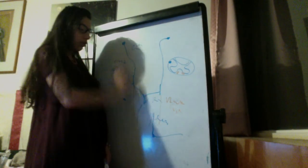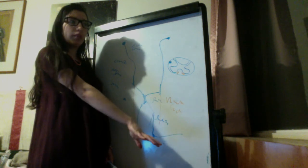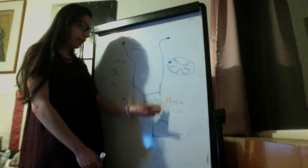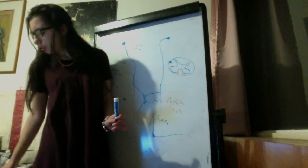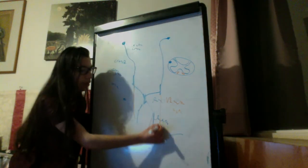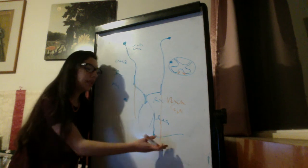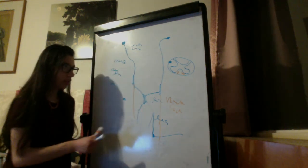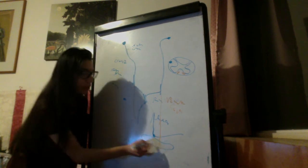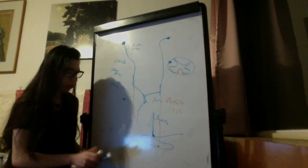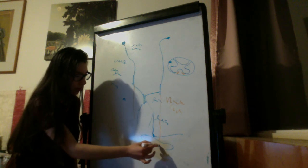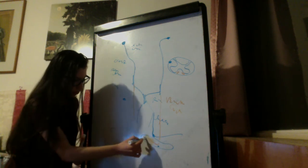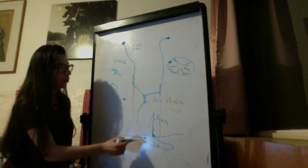The lateral corticospinal tract generally supplies the upper trunk, upper limbs, and neck. The ventral corticospinal tract descends all the way down to the level at which the lower motor neuron is going to exit — it does not synapse directly on that lower motor neuron. Instead, it crosses to the other side through the anterior commissure of the spinal cord, and then synapses with the lower motor neuron on the contralateral lateral side.